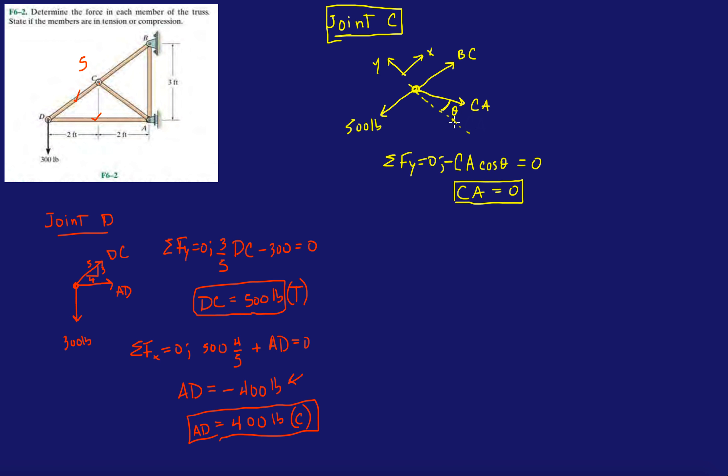So, if you don't follow that, look at this diagram. Figure out the angle and then sum the forces in the Y and sum the forces in the X. And you should find that CA has to be zero.